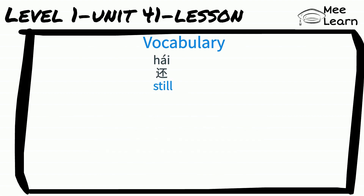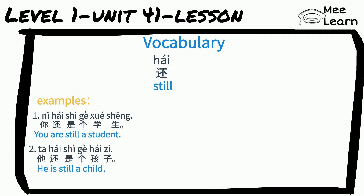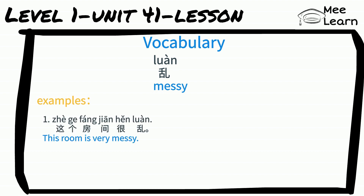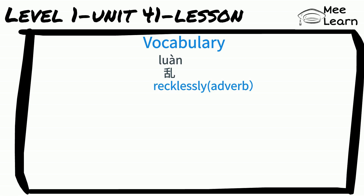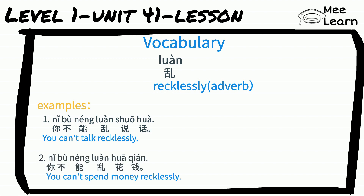还 means 'still.' For example: 你还是个学生 — You are still a student. 他还是个孩子 — He is still a child. 乱 means 'messy.' For example: 这个房间很乱 — This room is very messy. Here, 乱 is used as an adverb meaning 'recklessly.' For example: 你不能乱说话 — You can't talk recklessly. 你不能乱花钱 — You can't spend money recklessly.